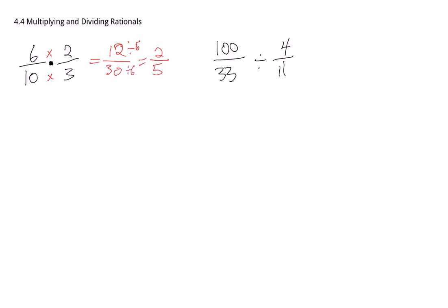That would have been the way you probably would have done something like that in junior high — multiply the tops, multiply the bottoms, and simplify. But what I want to do is look at this one again and instead of multiplying first and simplifying, let's see what would happen if we simplify first.